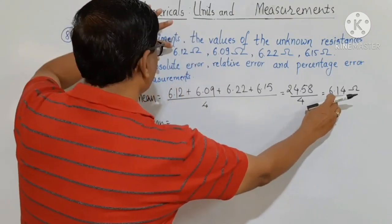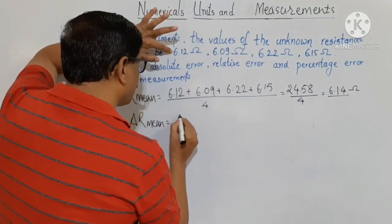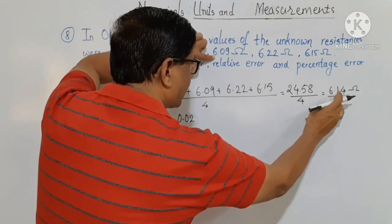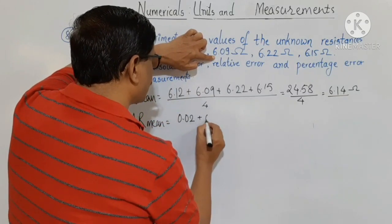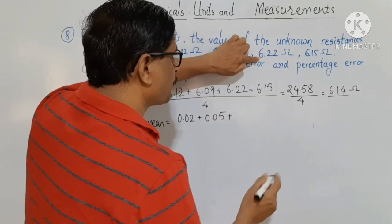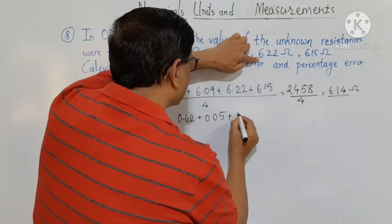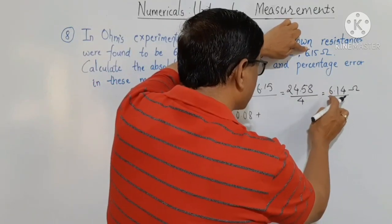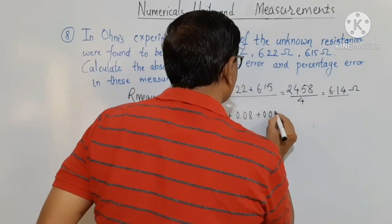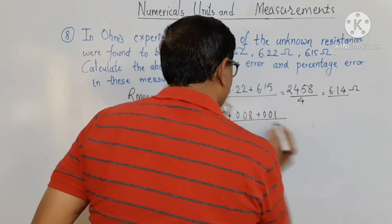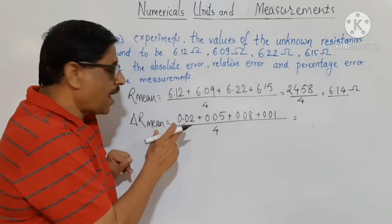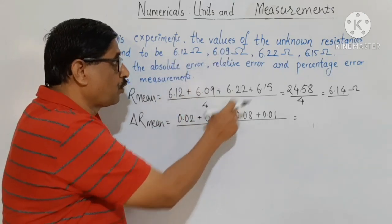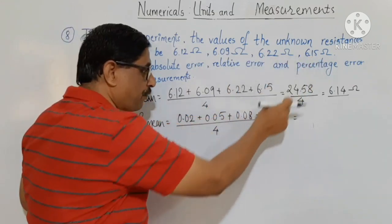The absolute errors are: |6.14 - 6.12| = 0.02; |6.14 - 6.09| = 0.05; |6.22 - 6.14| = 0.08; and |6.15 - 6.14| = 0.01. These are the four absolute errors for the four observations.